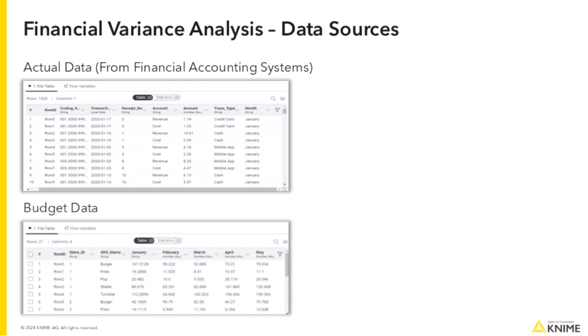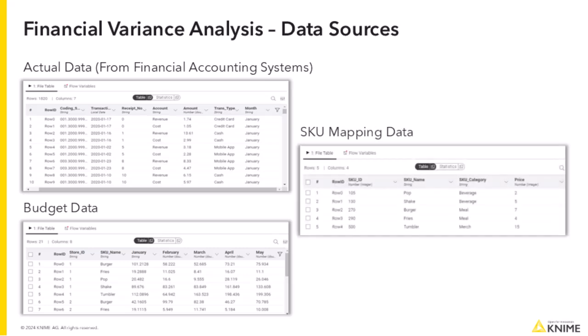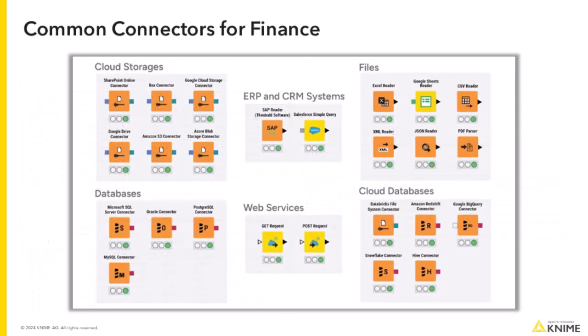We will also use budget information. As you can see, this looks like a traditional budget report that is designed for humans to read, but not necessarily the best for analysis. We will also use SKU mapping data to map a SKU ID to something more meaningful, such as SKU name, SKU category, and price. KNIME can connect to multiple systems using various dedicated connector nodes, but to make this example work on any laptop, we have just used Excel files for simplicity.